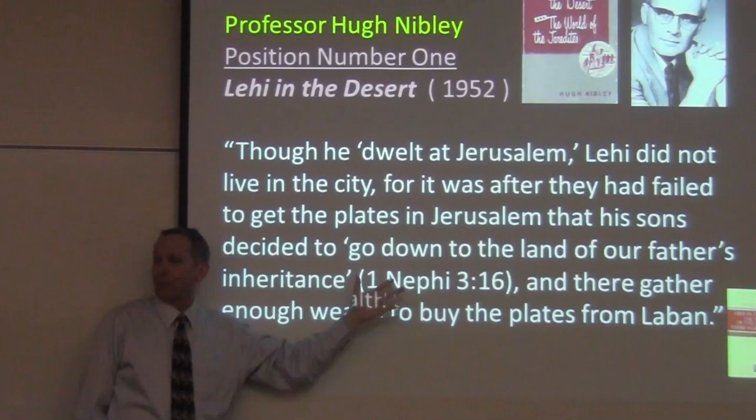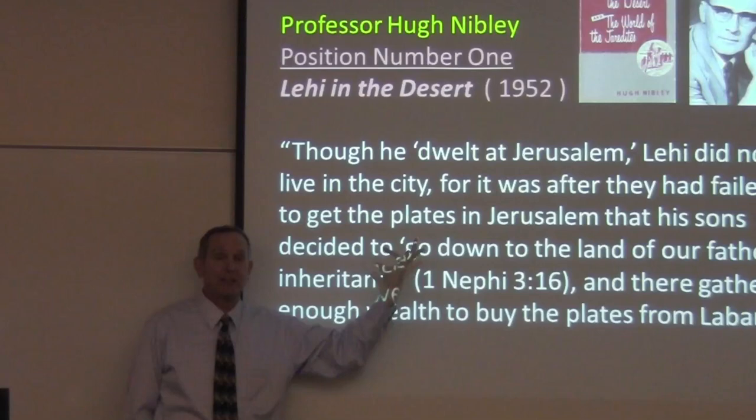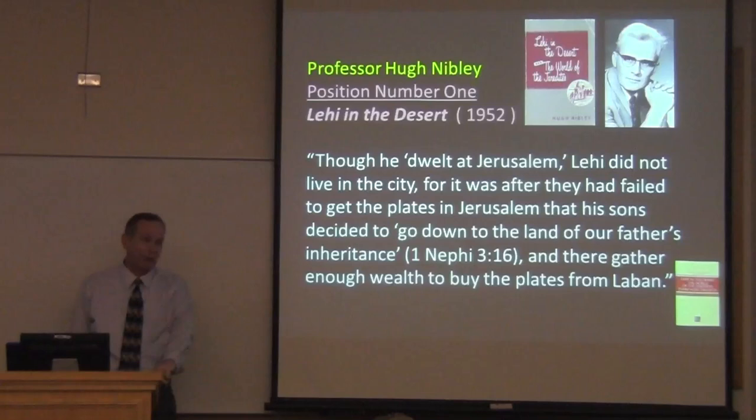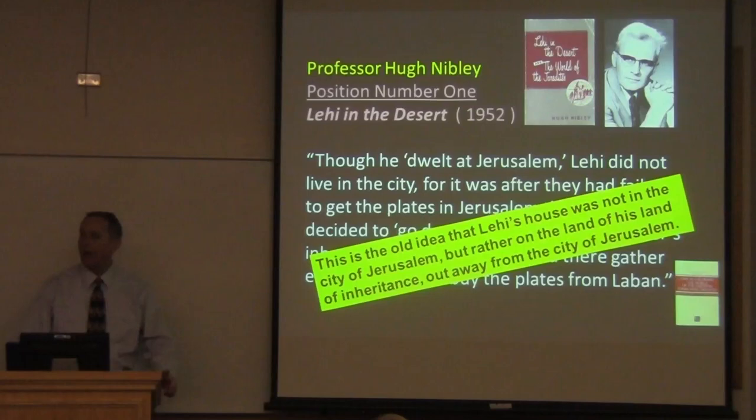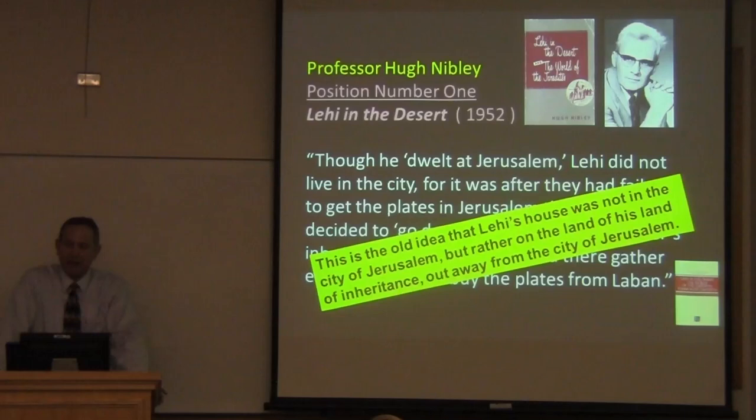He was a younger scholar in those days, but highly respected. And so he put out this book, and people began teaching this — and they have taught this for decades. You can still find this taught in some former classes because of this classic book, Lehi in the Desert. This is, if you will, the old idea — that Lehi's house was somehow not in the city of Jerusalem, but rather on the land of his inheritance out away from the city of Jerusalem. But how can you call that Jerusalem if it's not in Jerusalem?